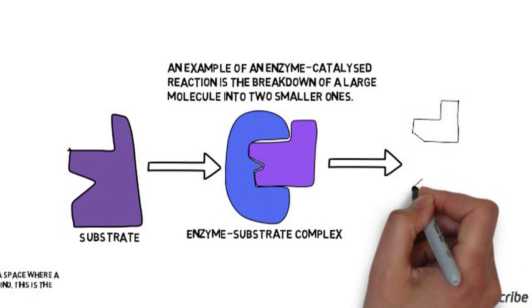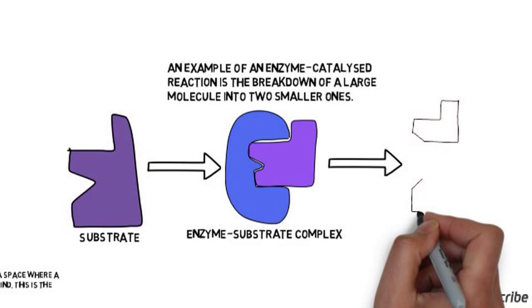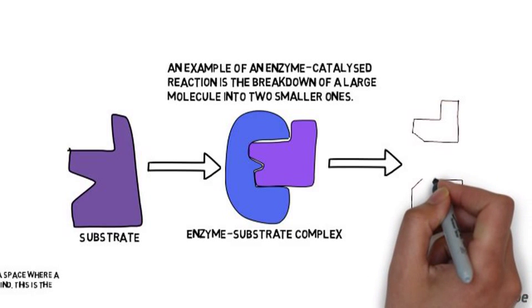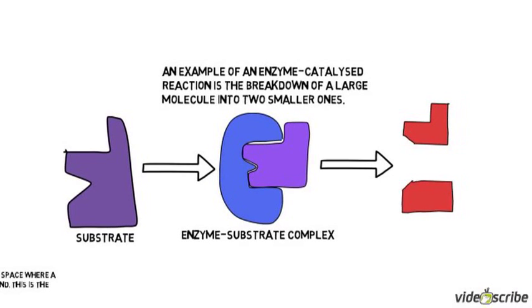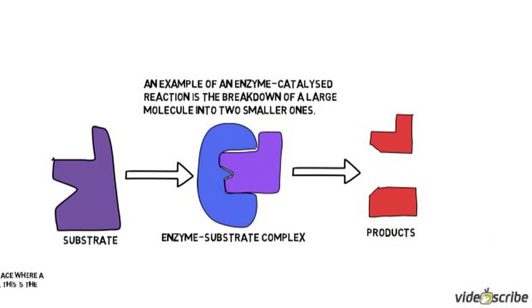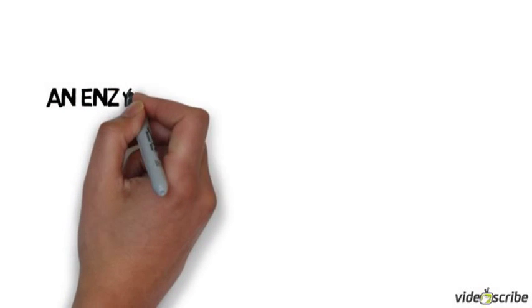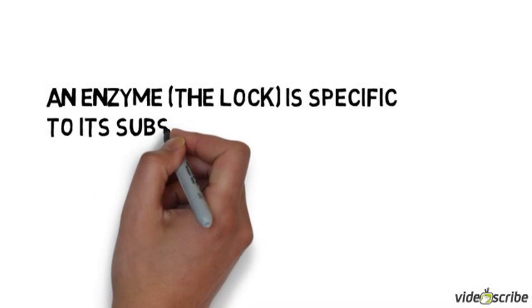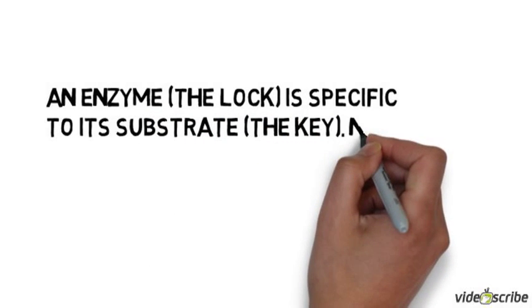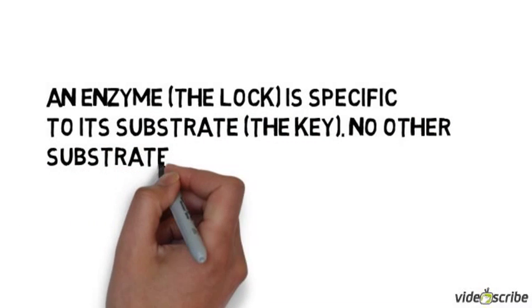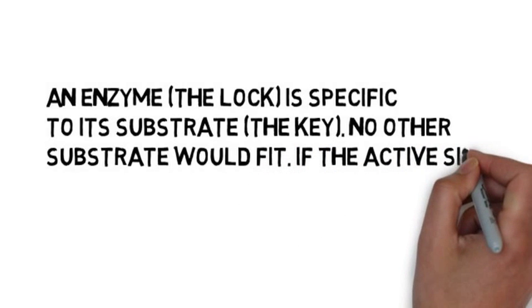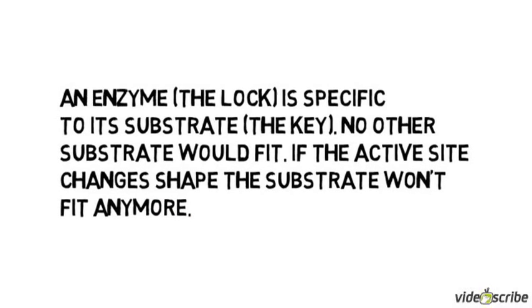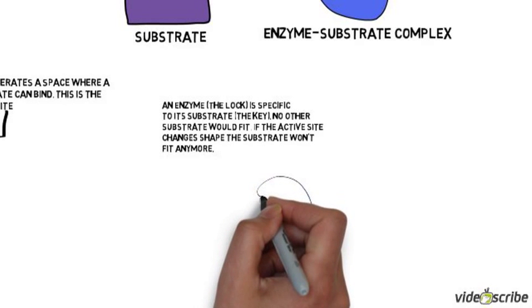The enzyme can go back and pick up more substrate — it doesn't get changed, it doesn't get used up. Other reactions will go the other way: you might have two smaller molecules joining together to make one bigger product, or changing one substance into the next substance. The enzyme is specific to the substrate; a different enzyme doesn't work on that particular substrate, and a different substrate won't fit into a particular enzyme.